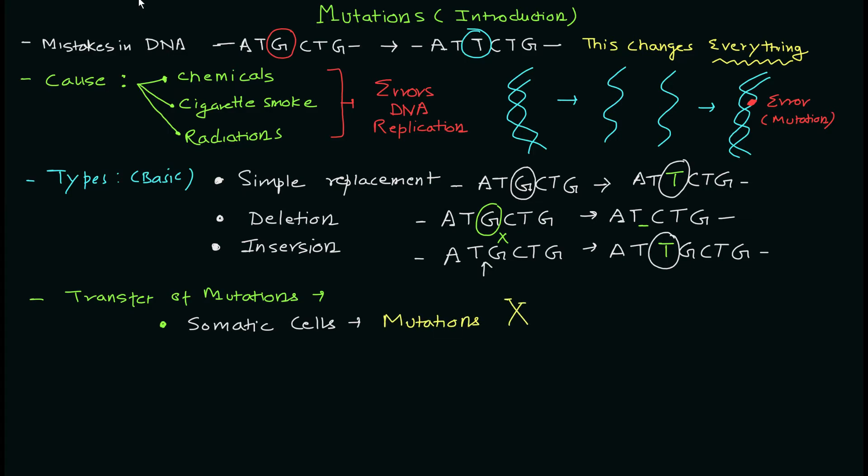But if you have mutations in the germline cells, they are transferred to the offspring. This is an important point to remember: germline cells like sperm and eggs, if they have mutations, the offspring will acquire those mutations.